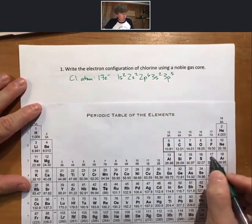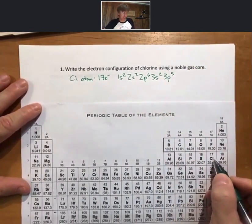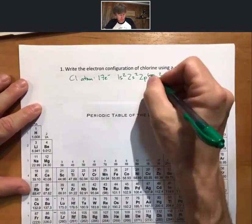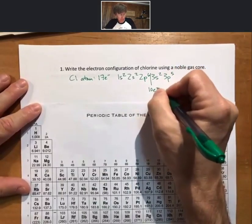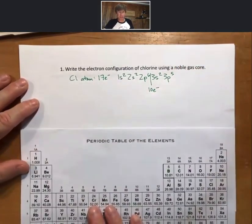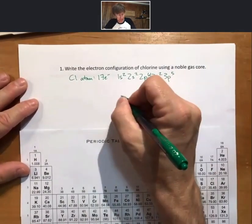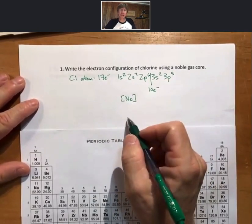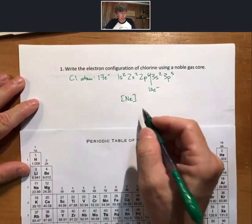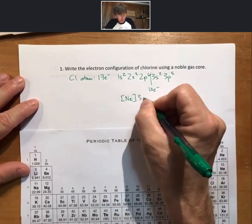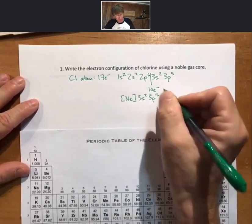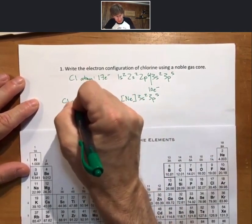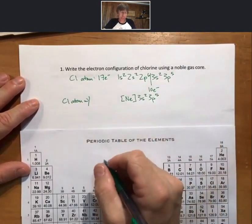For a noble gas core, you go from chlorine's position on the periodic table backwards to the previous noble gas. That will be 10 electrons. For those 10 electrons that are equivalent to the same electrons as neon, you put the chemical symbol for neon in square brackets, and then write what's left. So this is the chlorine atom with noble gas core.